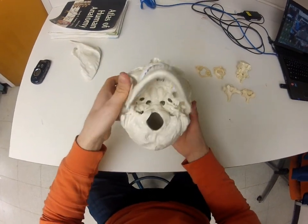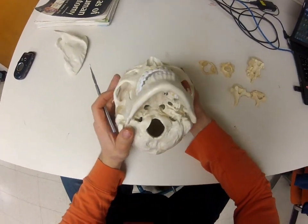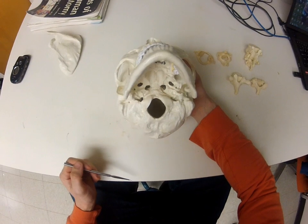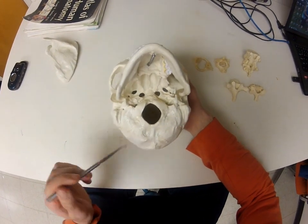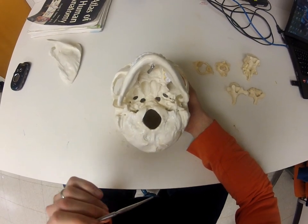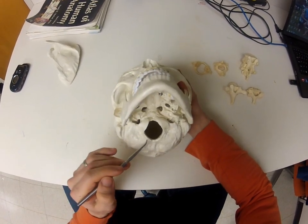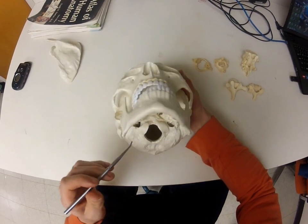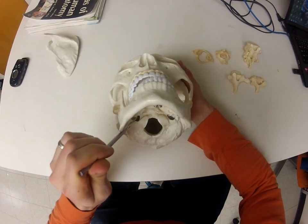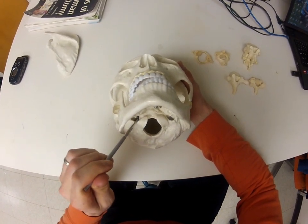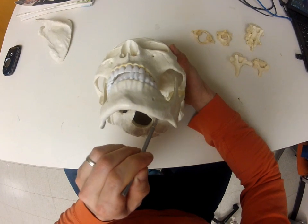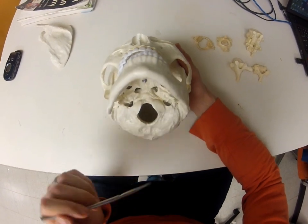Looking at the inferior side of the skull, we see the large opening called the foramen magnum, where the spinal cord connects to the brain. On either side are two saddle-shaped occipital condyles. Anterior and lateral to the condyles we have two openings: the more posterior is the jugular fossa and the more anterior is the carotid canal - visible on both sides.